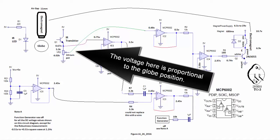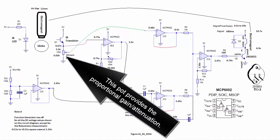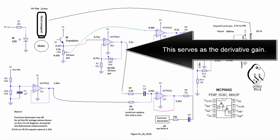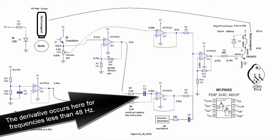The voltage here is proportional to the globe position. This pot provides the proportional gain — actually attenuation in this case. This component serves as the derivative gain, and the derivative occurs here for frequencies less than 48 Hz.